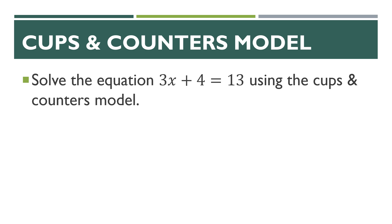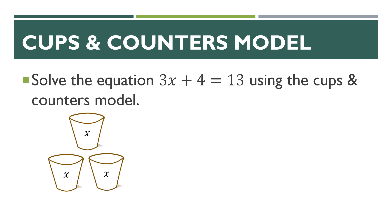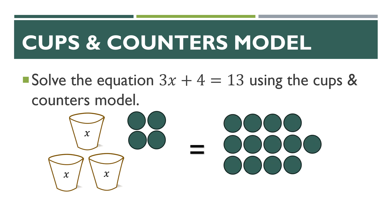On the left-hand side of the equation, we have three X plus four — so three cups plus four counters. On the right-hand side we have thirteen, so that's thirteen counters. We're going to start by noticing that we have four counters on the left. We match up those four counters on the left with four counters on the right and remove them from the equation, so that we're left with only cups on the left-hand side.